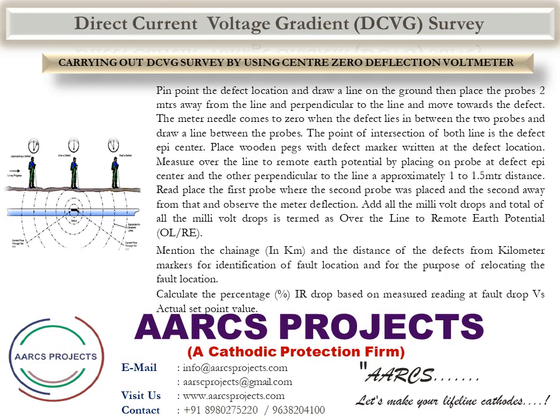Place wooden pegs with a defect marker written at the defect location. Measure over the line to remote earth potential by placing one probe at the defect epicenter and the other perpendicular to the line, approximately one to one and a half meters distance. Replace the first probe where the second probe was placed and move the second further away, observing the meter deflection. Add all the millivolt drops — the total of all millivolt drops is termed as over-the-line to remote earth potential.